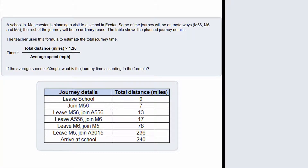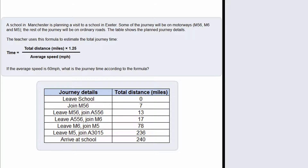In this question we are told that a school in Manchester is planning to visit a school in Exeter, and some of the journey will be on motorways and the rest of the journey will be on ordinary roads. We've got a table here that shows the planned journey details.